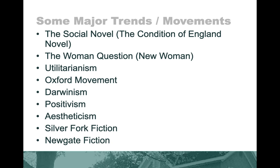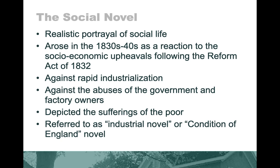Utilitarianism, Darwinism, the Oxford movement, positivism, aestheticism, silver fork fiction, and Newgate fiction are all important genres and movements of the Victorian period. Please post examples of silver fork fiction and Newgate fiction in the comments section.